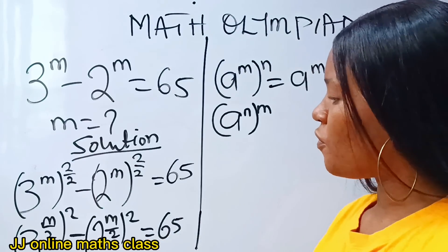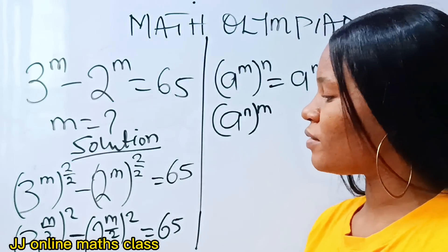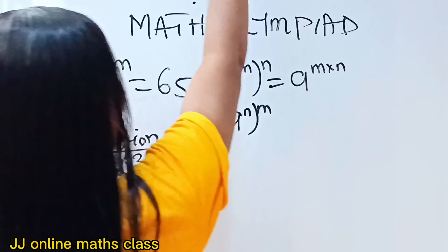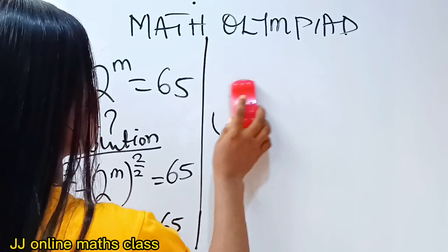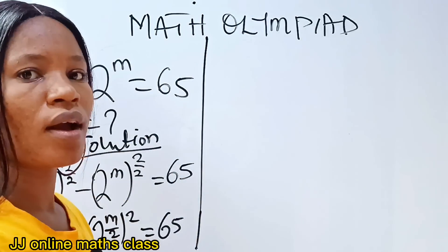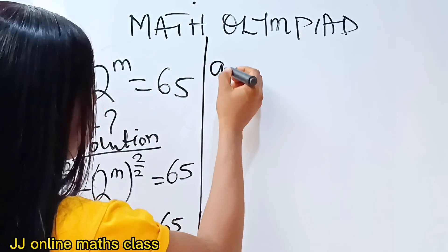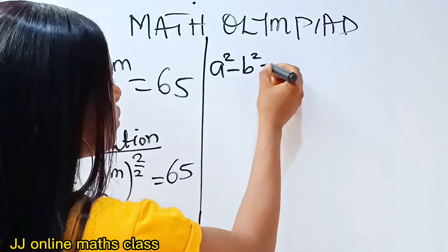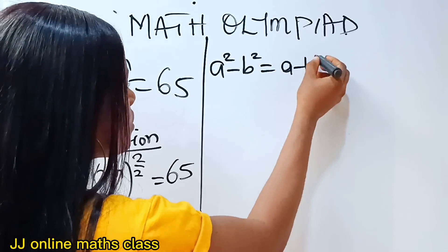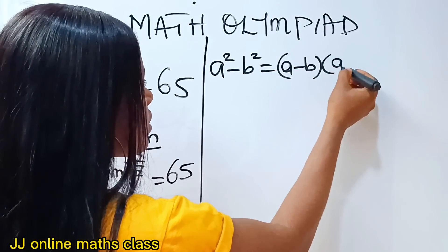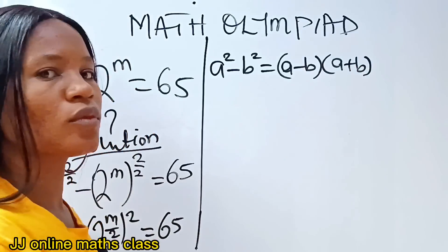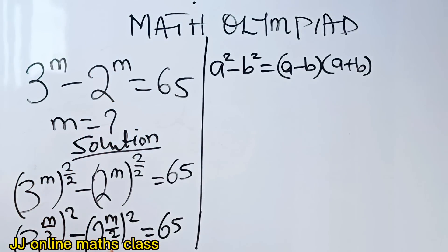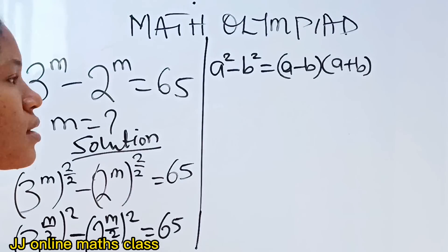Alright. If you look at this, notice that we have a difference of two squares. And this is what difference of two squares says: a squared minus b squared is equal to (a minus b)(a plus b). In this case, this is our a and this is our b.